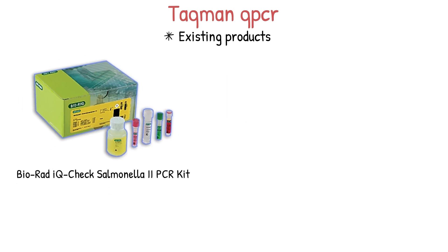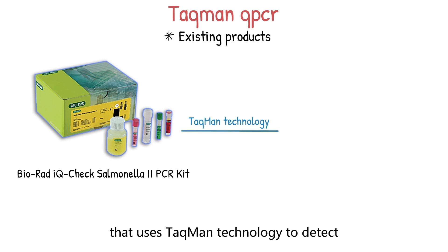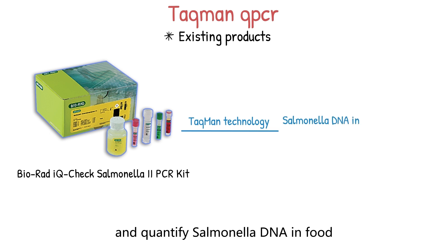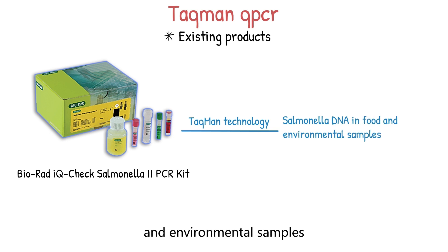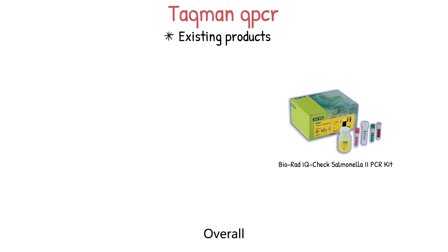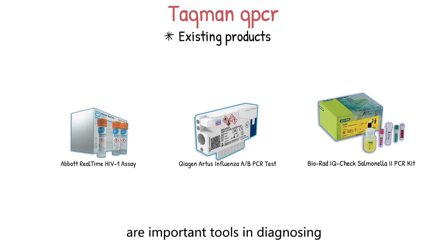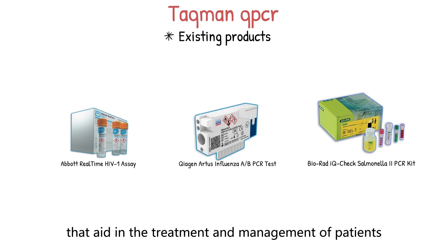Three is the Bio-Rad iQ-Check Salmonella II PCR kit. This is a quantitative test that uses TaqMan technology to detect and quantify Salmonella DNA in food and environmental samples. The test is specific and can accurately identify the presence of Salmonella in the sample. Overall, these IVD products that use TaqMan qPCR technology are important tools in diagnosing and monitoring infectious diseases. They provide accurate and sensitive results that aid in the treatment and management of patients.